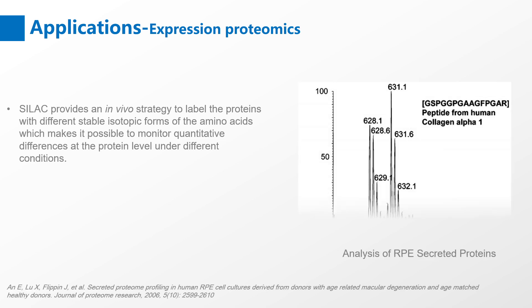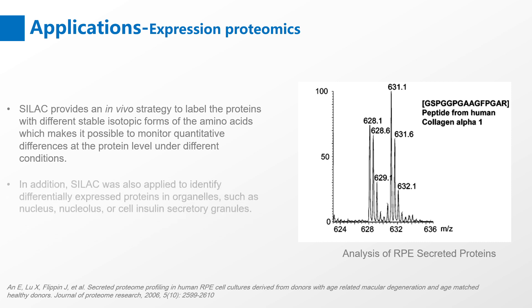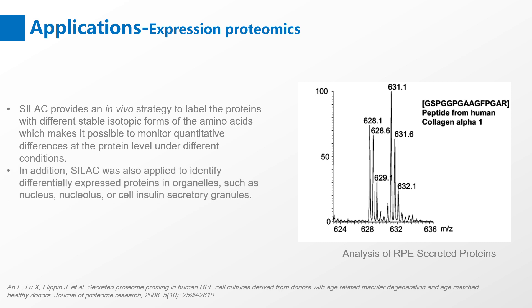SILAC provides an in vivo strategy to label the proteins with different stable isotopic forms of the amino acids, which makes it possible to monitor quantitative differences at the protein level under different conditions. In addition, SILAC was also applied to identify differentially expressed proteins in organelles, such as the nucleus, nucleolus, or cell insulin secretory granules.